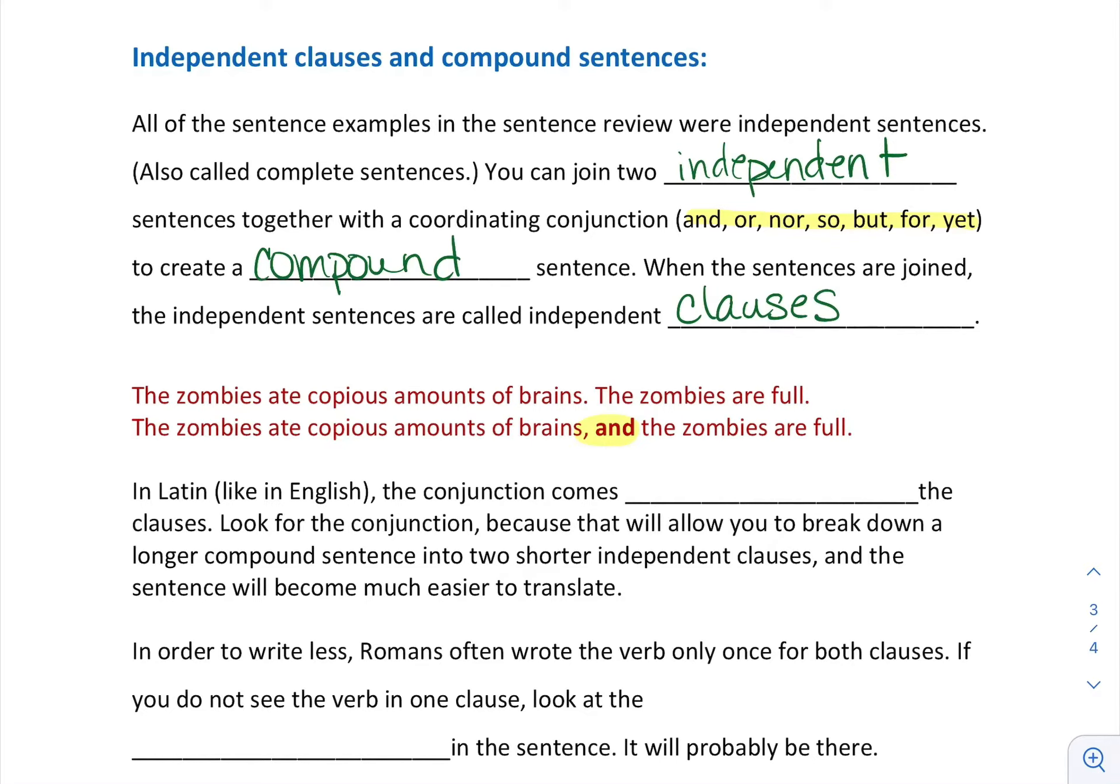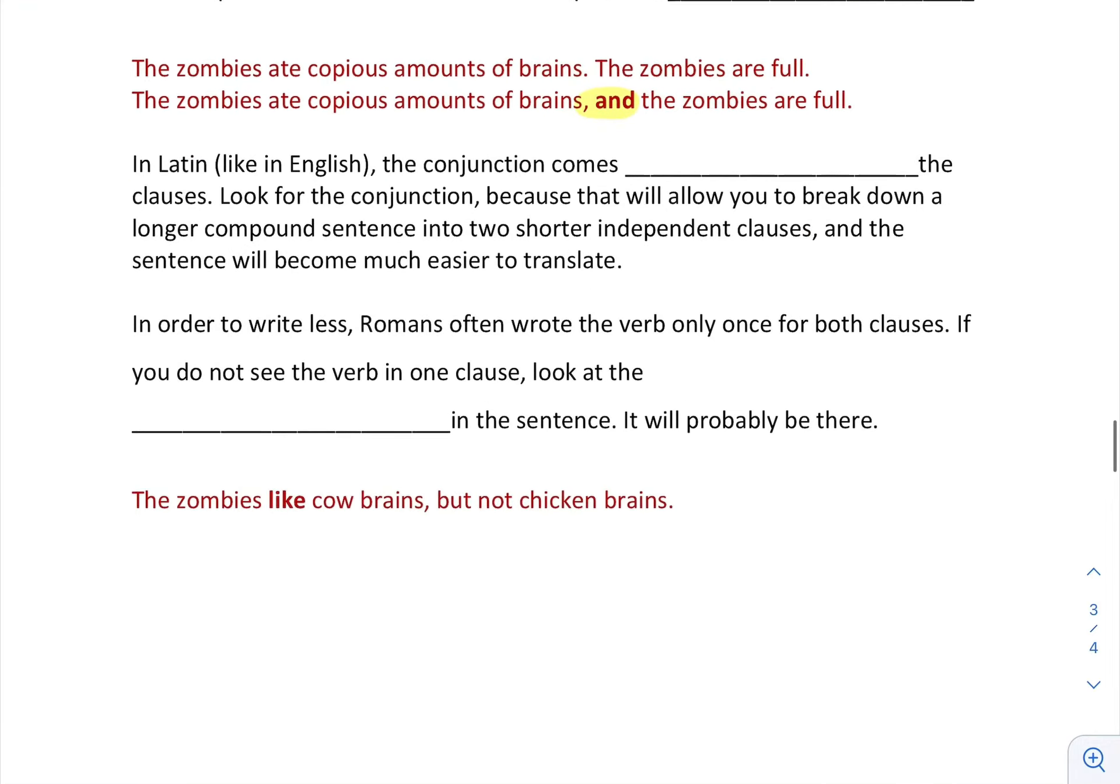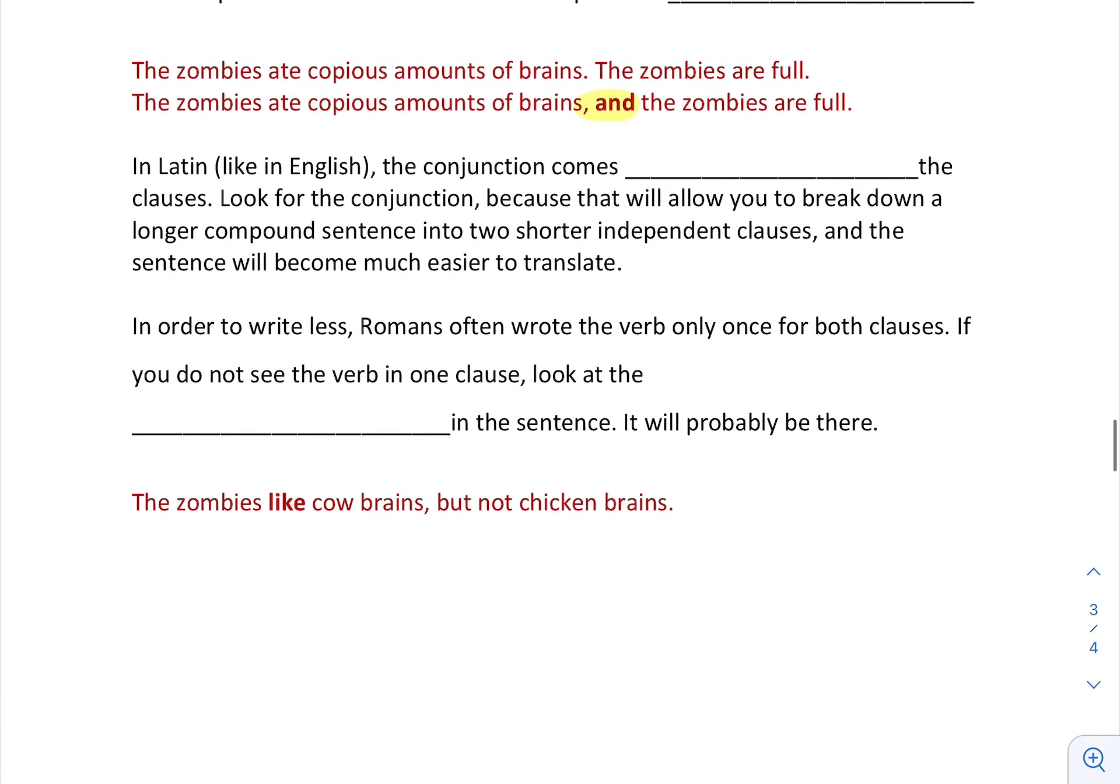Pretty easy. So in Latin, like English, the conjunction comes in between the clauses. Look for the conjunction because that will allow you to break down a longer compound sentence into two shorter independent clauses, and the sentence will be much easier to translate. Each of them remember has a subject and verb, makes complete sense. You could break it apart, take out the coordinating conjunction and it makes complete sense.